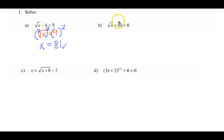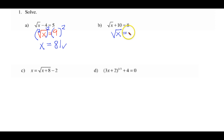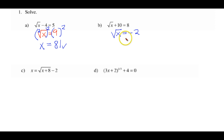Here again, we want to isolate the radical. When we transpose the positive 10, it becomes a negative 10 plus 8, giving us a negative 2. Can we have the square root of something equal a negative? The answer is no. So for something like this, there is no solution.